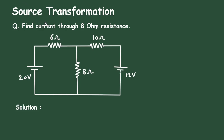To get the free notes of electrical circuits, check the link in the comment section and install the app for free. Source transformation question: find the current through the 8 ohm resistance. Here in this circuit we have to find the current through this 8 ohm resistance by using the source transformation technique.